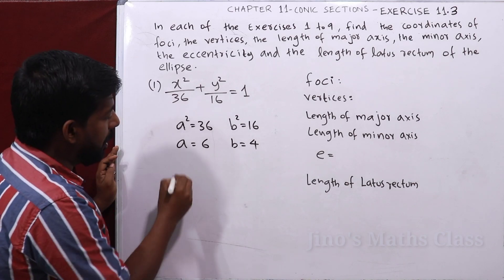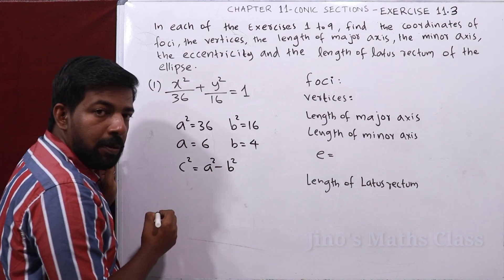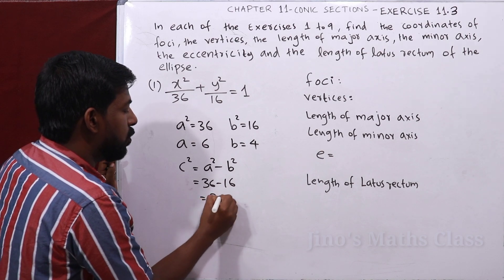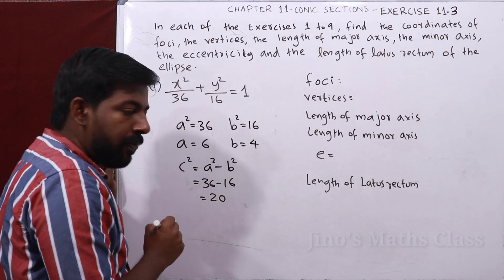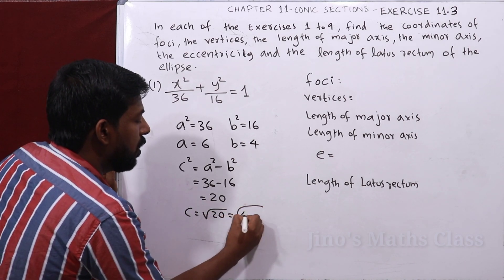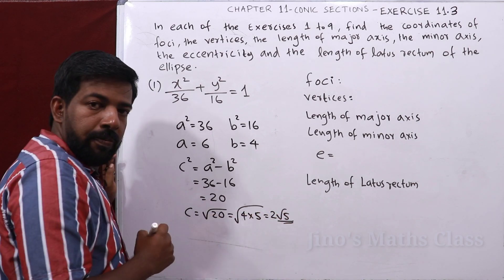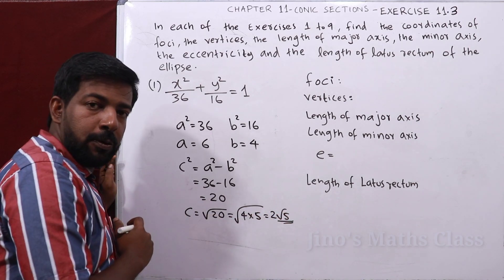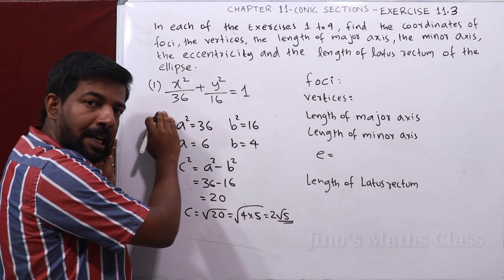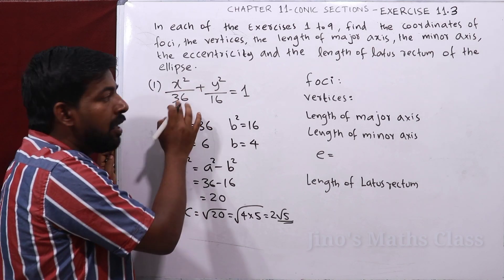We find c²: in the ellipse, c² = a² − b² = 36 − 16 = 20. So c = √20 = √(4×5) = 2√5. The major axis is the x-axis because a² = 36 is under x².